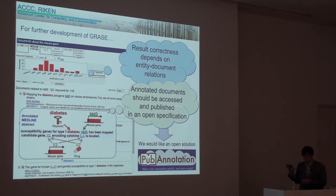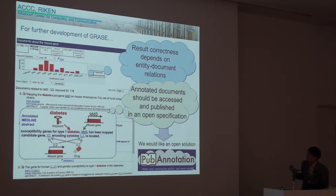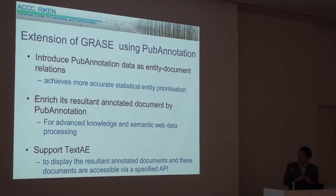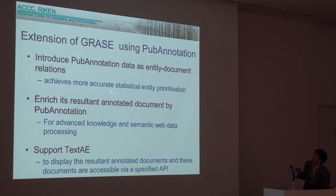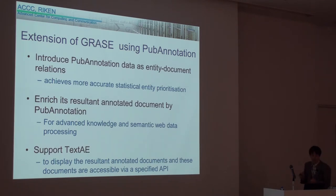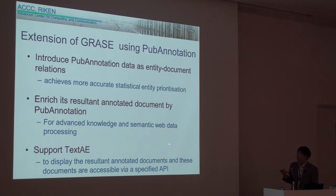The second point is that the resultant data, including annotated documents, should be accessed and published in an open specification. To address these points, we would like to introduce pub annotation, which enables us to share text annotations in an open environment. GRACE can introduce pub annotation data as entity-document relations to achieve more accurate statistical entity prioritization, and also enrich its resultant annotated documents for advanced knowledge and semantic web data processing. By supporting TEXT-A, GRACE can display the resultant annotation document, accessible via the specified API.